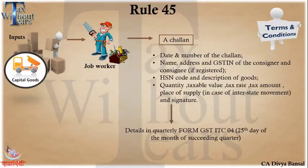Rule 45 says that inputs and capital goods when given to the job worker must be accompanied with a challan. The challan should contain the date and number of the challan, name and address, GST number of the consigner, consignee if required, HSN code of the goods, and other details of the goods supplied to the job worker. Such details must also be provided in the quarterly Form ITC-04 by the 25th of the month of the succeeding quarter.